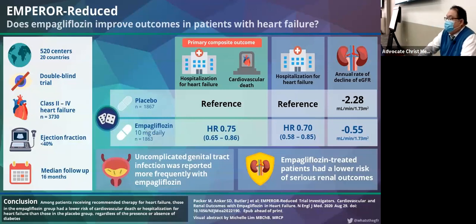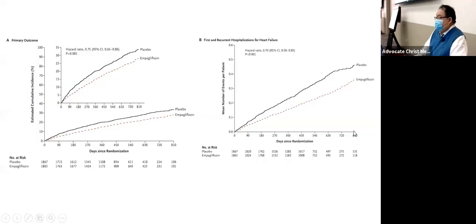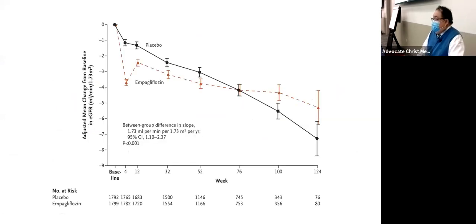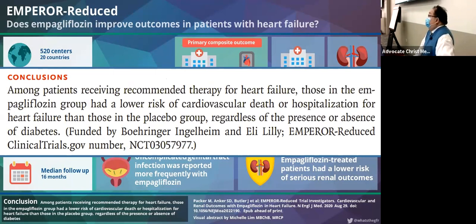The EMPEROR-Reduced study is an international study across 20 countries, double-blind, in patients with class 2 to 4 heart failure with an ejection fraction less than 40%, followed for over a year. Those patients on empagliflozin showed significant hazard ratio reductions. The annual rate of GFR decline also showed the familiar initial dip that then stabilizes. The conclusion was that among patients receiving recommended heart failure therapies, those on empagliflozin had a lower risk of cardiovascular death or hospitalization for heart failure than those on placebo — with or without diabetes.